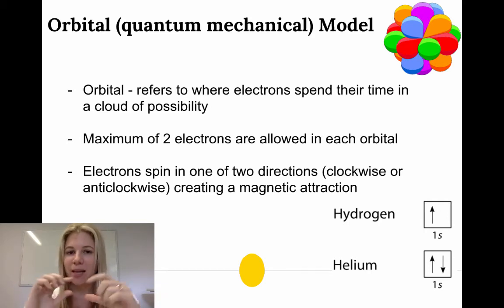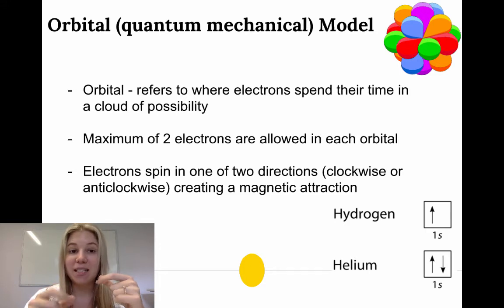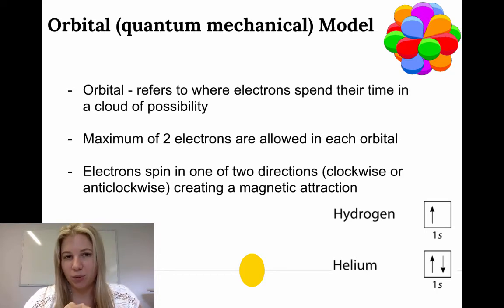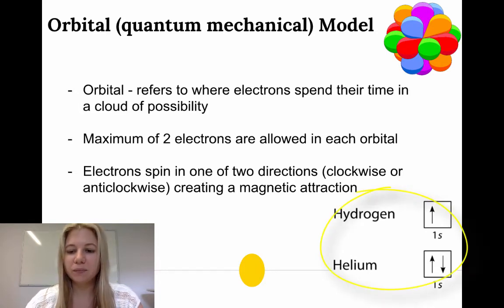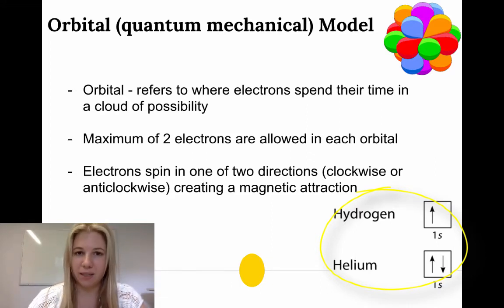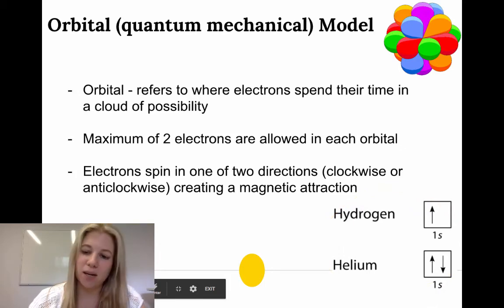What actually happens is each electron spins in a different direction — one clockwise, the other anti-clockwise. This creates a type of magnetic spin: one acts as a north magnetic pole and the other as a south magnetic pole, producing attraction. That's why two electrons can occupy the same orbital, and also why we can't have more than two. For hydrogen, there's only one electron spinning in one direction. For helium, there are two electrons spinning in opposite directions — and that's how we express that.